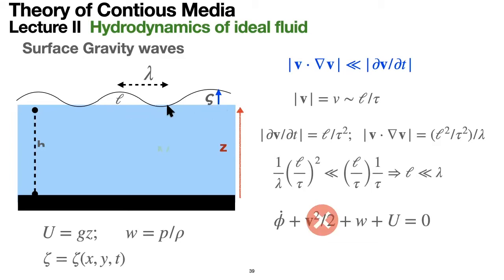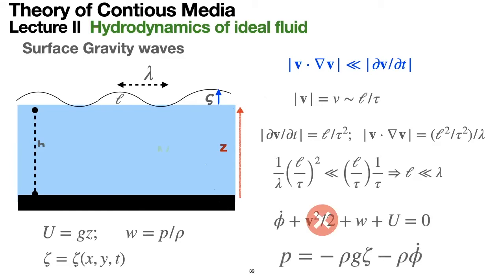I denote the dynamical elevation of the water surface as the Greek letter zeta, a function of x and time. Introducing w as pressure over density and substituting into the Euler equation, with gravity potential included and z replaced by zeta, we obtain a very simple form of the Euler equation.